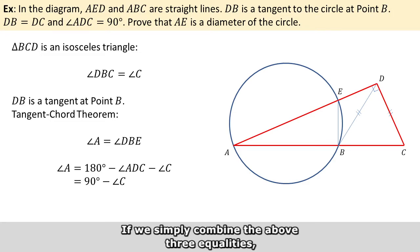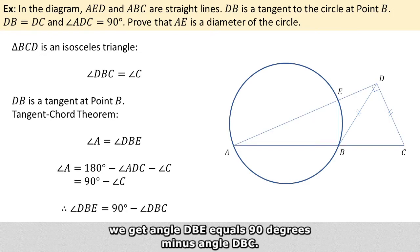And if we simply combine both three equalities, we get angle DBE equals 90 degrees minus angle DBC.